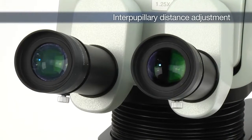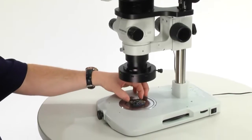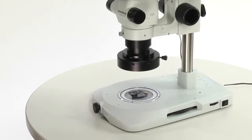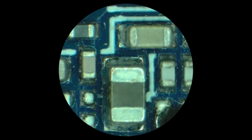Adjusting the interpupillary distance is necessary to obtain proper binocular vision. First, place a flat sample on the stage, adjust the lighting, and bring the sample into focus.